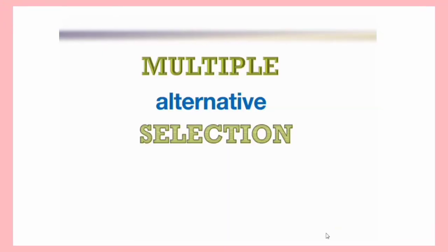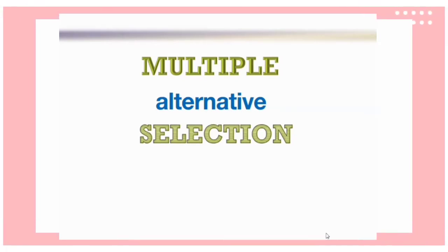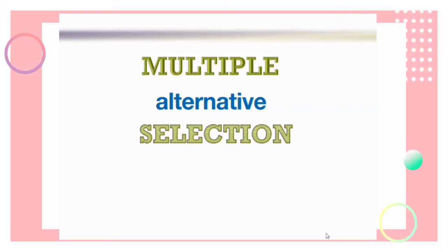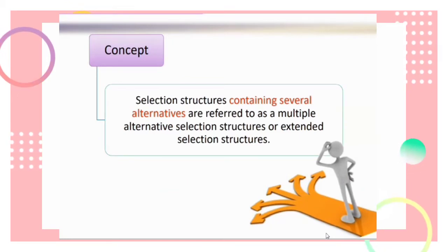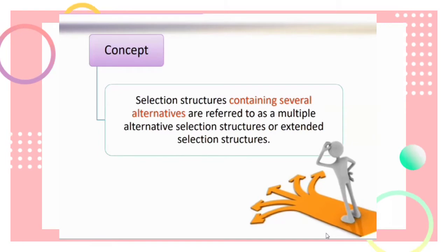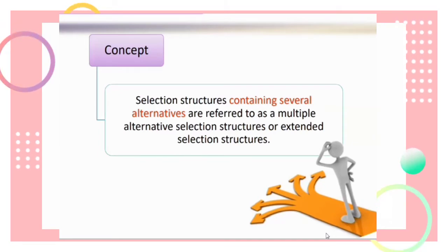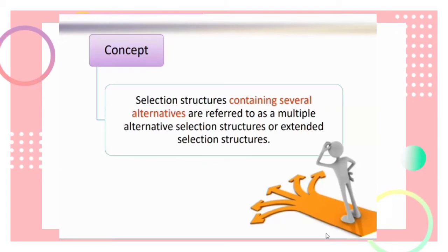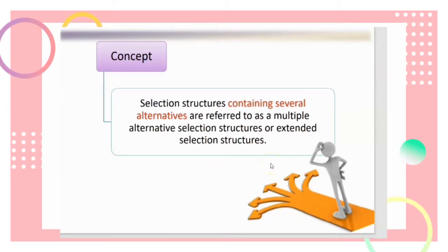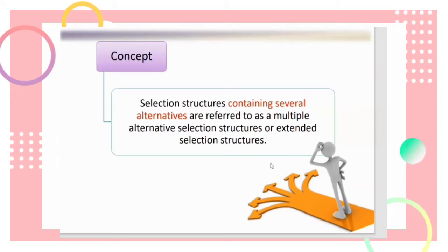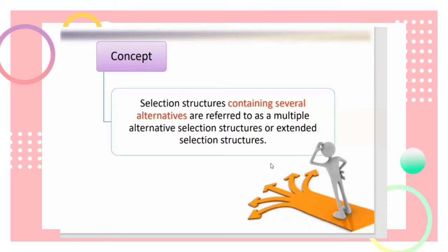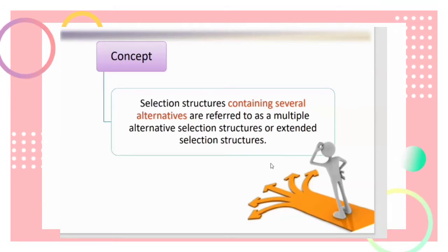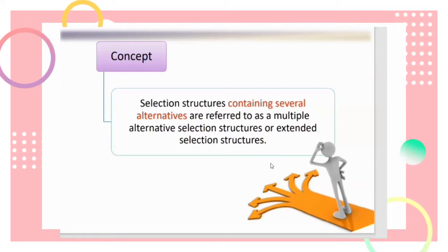Hello everyone. Today we will continue with the third type of control structure: selection multiple alternative. A multiple alternative selection structure contains several alternatives, also referred to as an extended selection structure. It checks many conditions to choose between many actions. Conditions are checked one by one, and when a condition is true, the action is performed and it stops checking the rest.